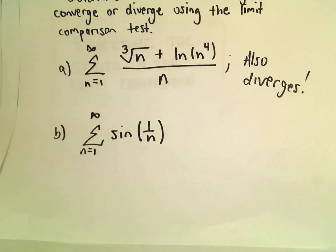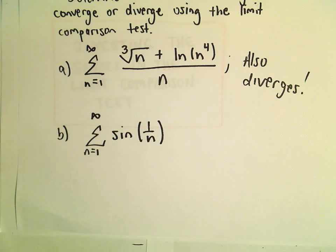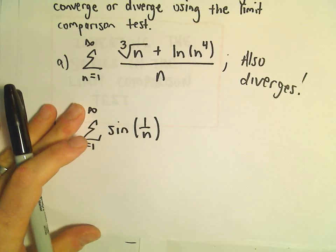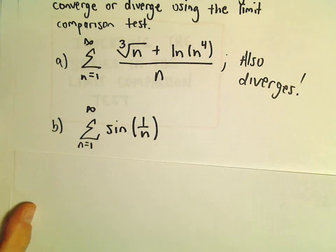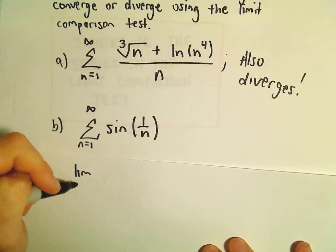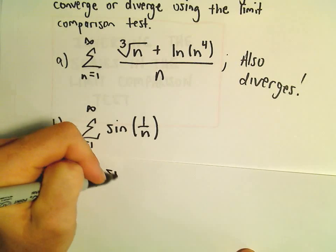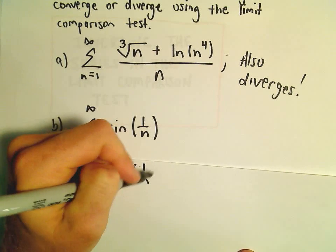So there's not a lot going on here with this series. You might first try to do the test for divergence. And if you do the test for divergence, we can do the limit as n goes to infinity. So this is what I do if I'm kind of completely unsure about a series.